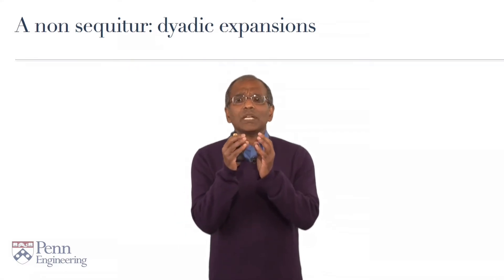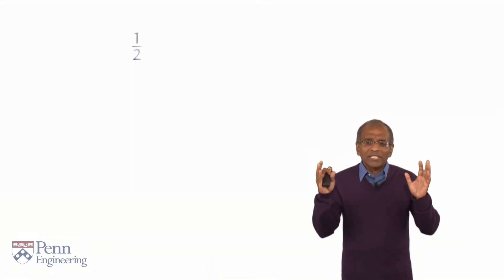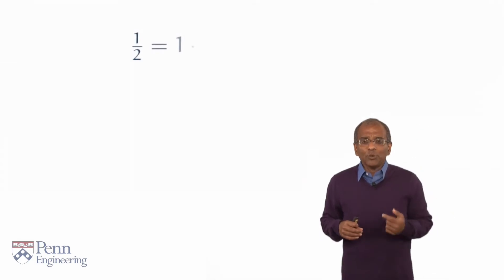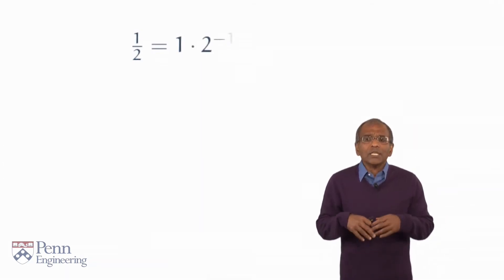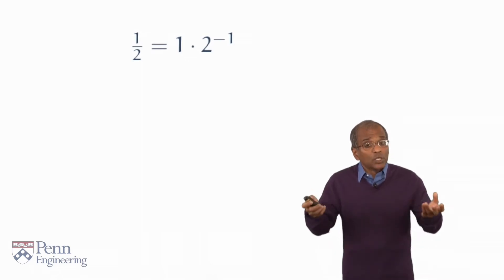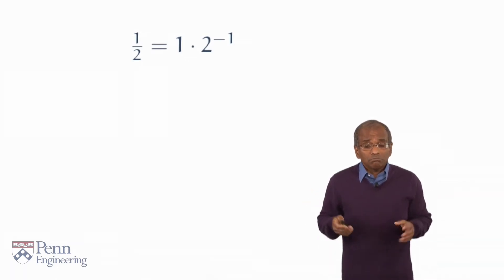Let's start with the number one half. We all know exactly what this means: one is in the numerator, two is in the denominator. So this means exactly one times two to the power minus one. No problem.